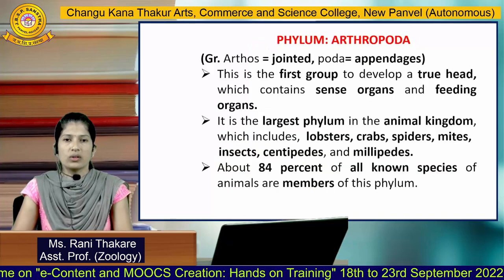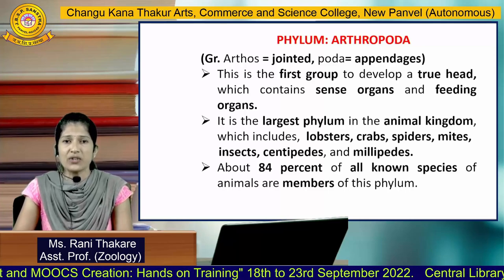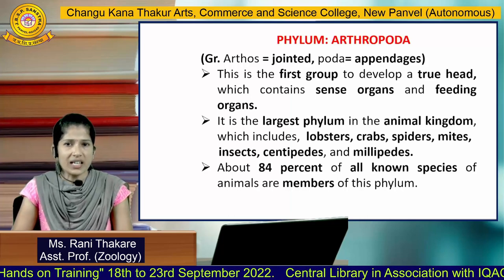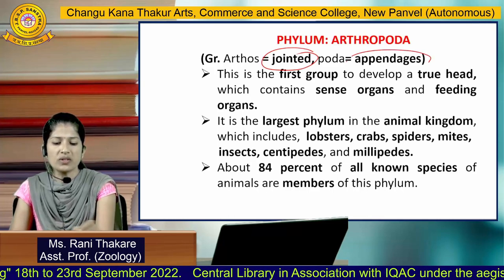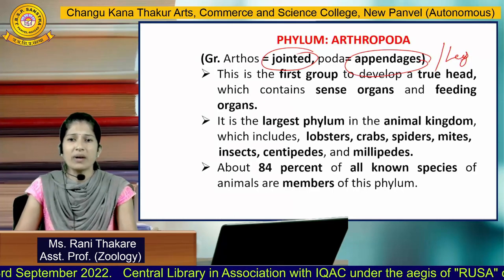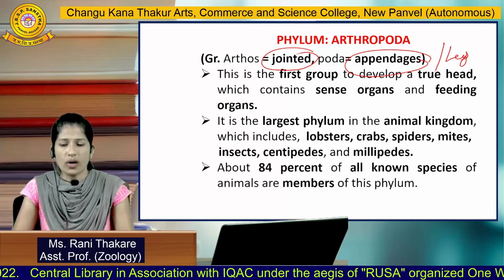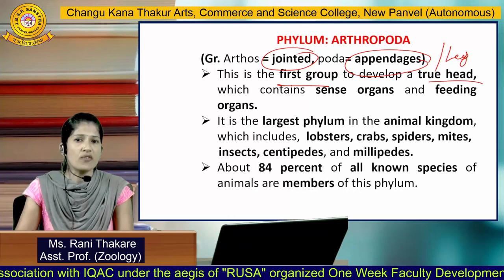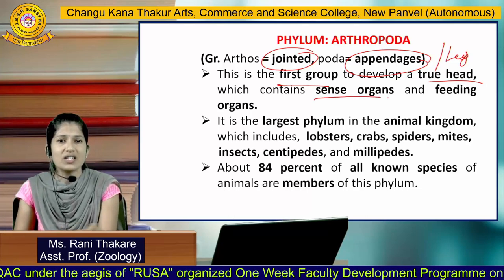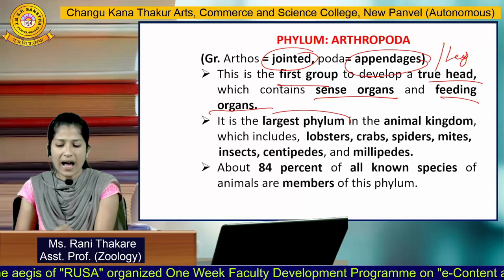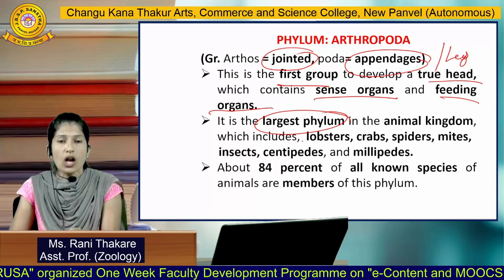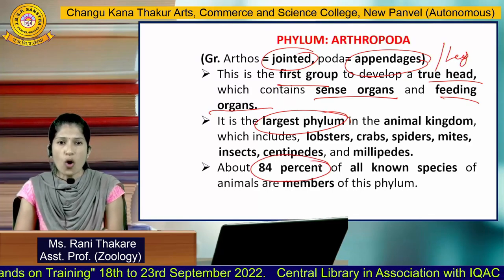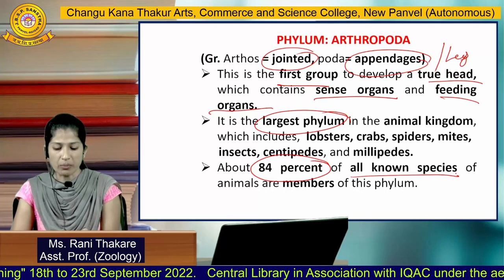Phylum Arthropoda is the largest phylum in the animal kingdom. The word is derived from the Greek language where 'arthros' means jointed and 'poros' means appendages or legs — so animals with jointed legs are placed here. Arthropoda is the first group to develop a true head with sense organs and feeding organs. It includes lobsters, crabs, spiders, mites, insects, centipedes, and millipedes. About 80% of all known animal species are placed under this phylum.